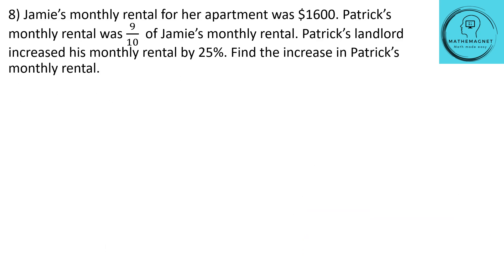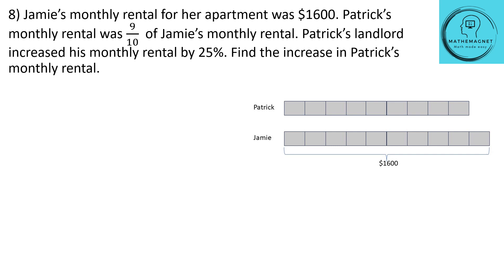Let's look at the last question — question number 8. Jamie's monthly rental for her apartment was $1600. Patrick's monthly rental was 9/10 of Jamie's monthly rental. Patrick's landlord increases the monthly rental by 25%. Find the increase in Patrick's monthly rental. Jamie will have 10 units whereas Patrick will have 9 units because of the fraction 9/10.